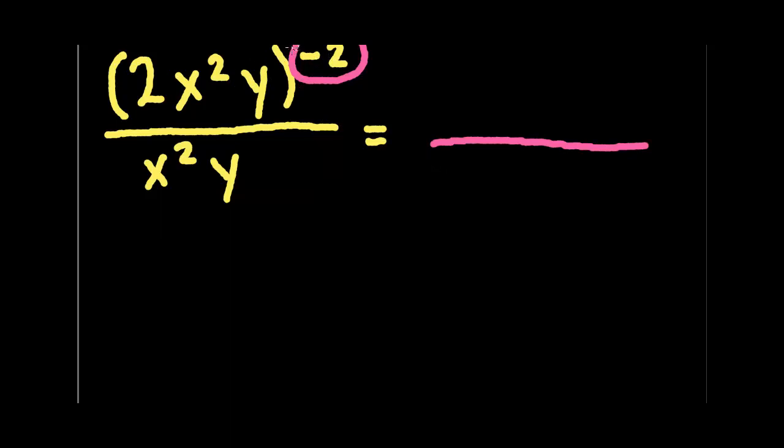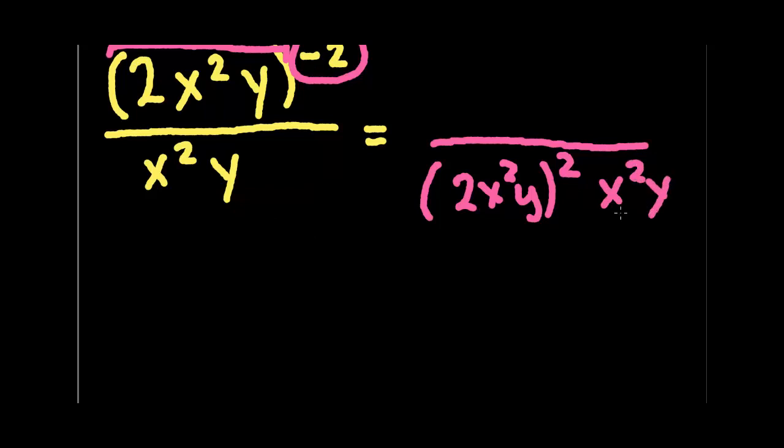So the negative 2, remember, is referring to this whole set here. So basically, it's a family. We talked about this before being tenants that are unhappy. Well, here's a whole family in this parentheses and they're unhappy. So the whole family is going to move downstairs. So we're going to have (2x squared y) in parentheses. And that negative 2, since the whole family has moved, now becomes a positive 2. And these two guys were down here to begin with and they already had positive exponents. So they were fine. Now there's nothing left on top. So what do we do when there's nothing on top? We just stick a 1 up there.